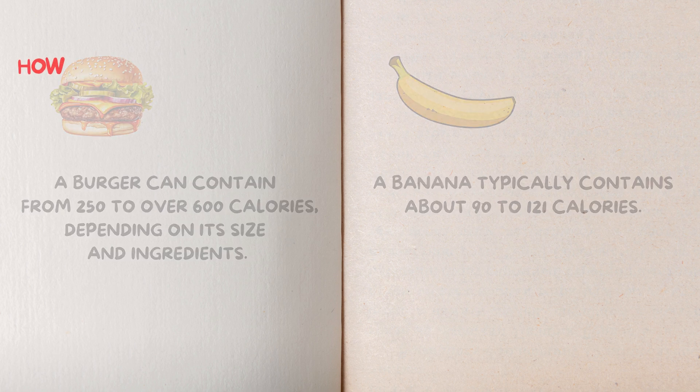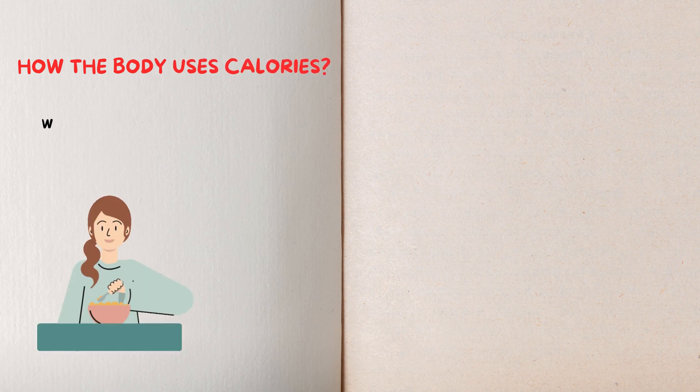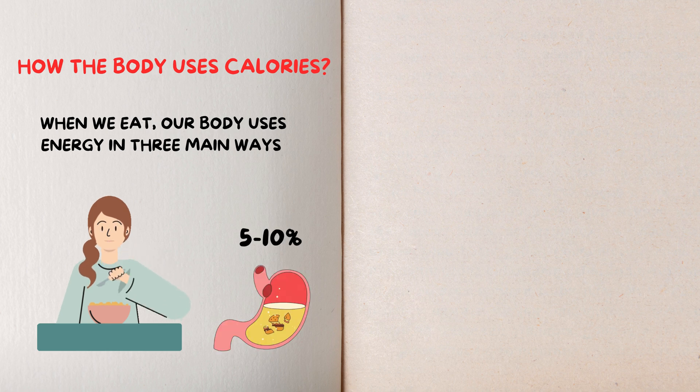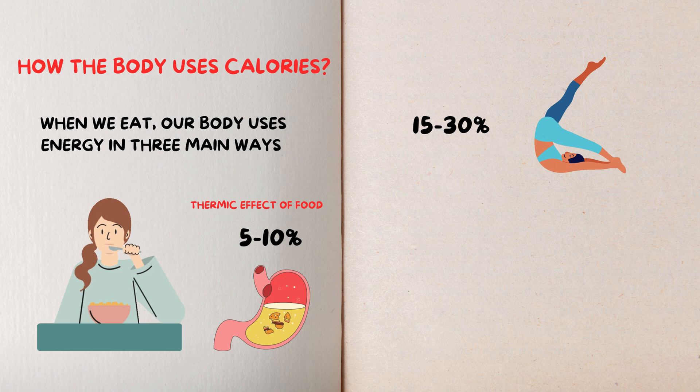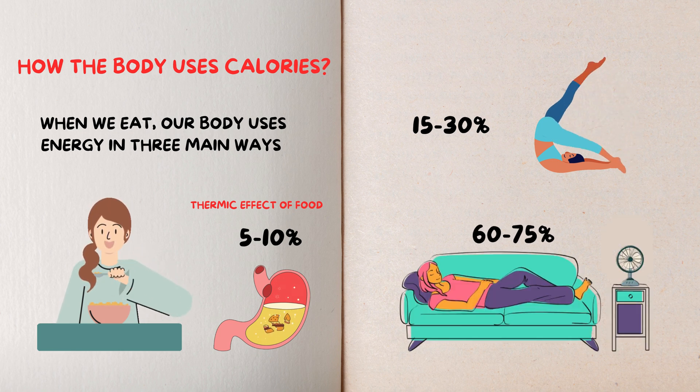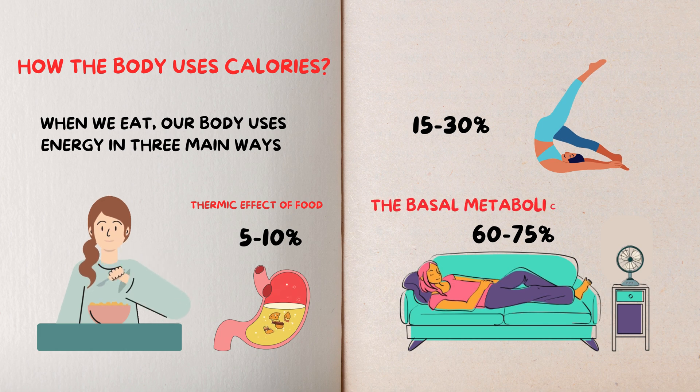How the body uses calories? When we eat, our body uses energy in three main ways. About 5 to 10 percent for digestion, known as the thermic effect of food, 15 to 30 percent for physical activity, and the largest portion, around 60 to 75 percent, supports basic bodily functions, which is known as the basal metabolic rate, BMR.